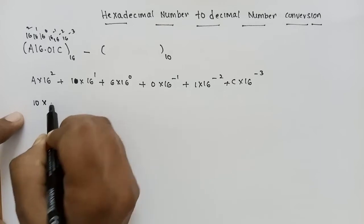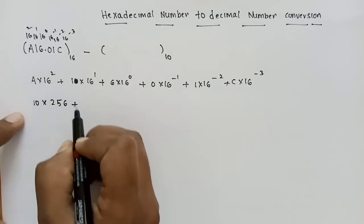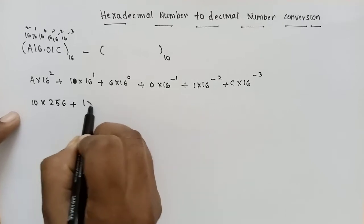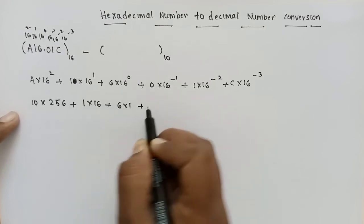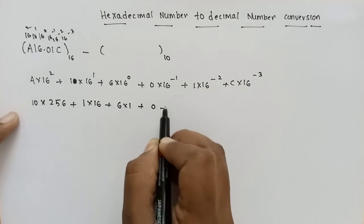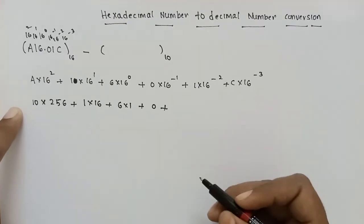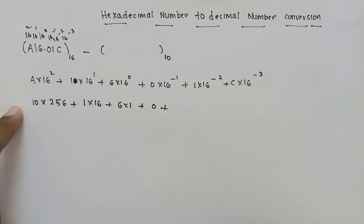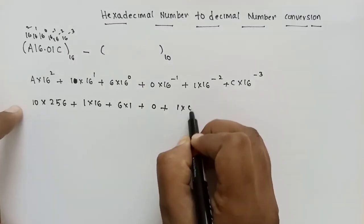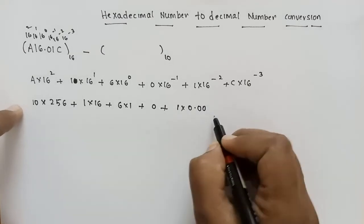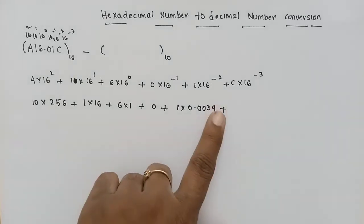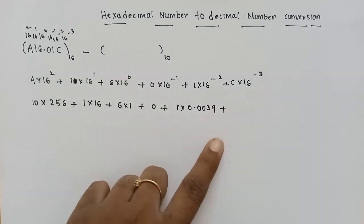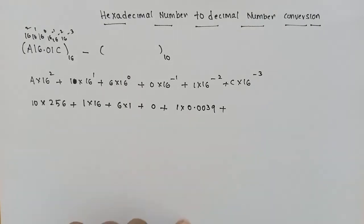100 into 16 squared. Then 16 into 16, which gives 256, plus 1 into 16 power 1 is 16. Anything to the power 0 is 1, so 6 into 1. Plus 0 into anything is 0. Plus 1 divided by 256, which is 0.0039. Calculate this value. Next, C into 16 power minus 3: A is 10, B is 11, C is 12.